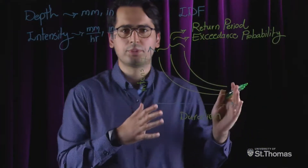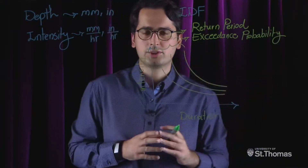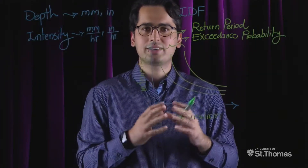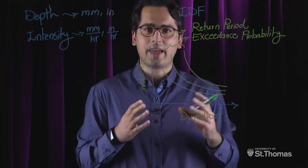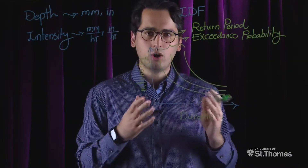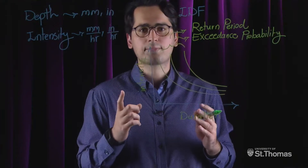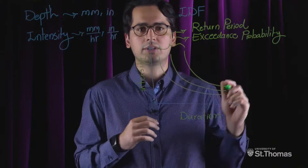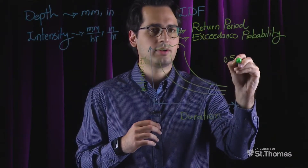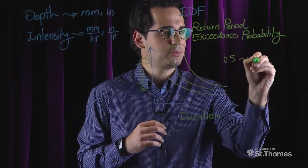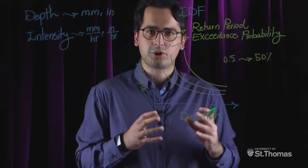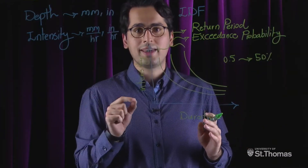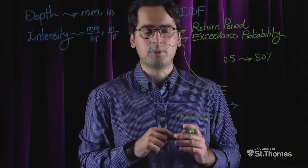Let's talk about return period and annual exceedance probability. The United States Geological Survey refers to the percent chance of occurrence of a rainfall as an annual exceedance probability, which is always a fraction of 1. For example, a storm or a rainfall event with annual exceedance probability of 0.5 has a 50% chance of occurring in any given year. The return period of a storm is the inverse of the exceedance probability.